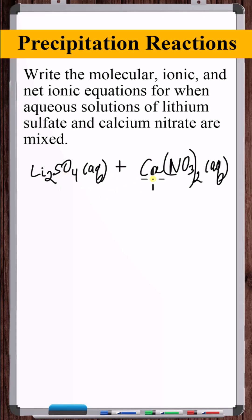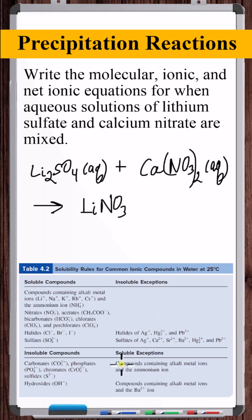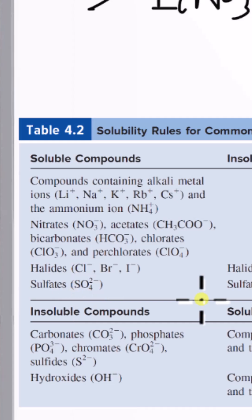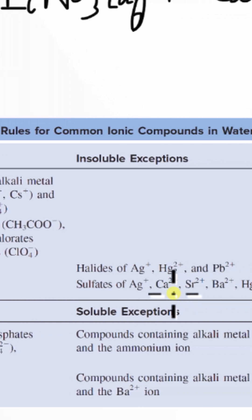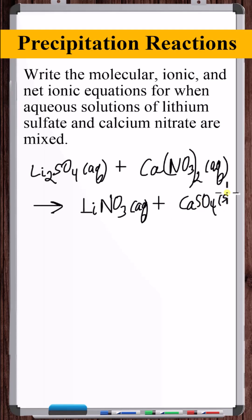The solutions are mixed and the ions can interact. The Li⁺ ions interact with NO₃⁻ ions to give lithium nitrate. Is this aqueous or insoluble? We check the solubility chart — all nitrates are soluble, so LiNO₃ is aqueous. Now Ca²⁺ interacts with SO₄²⁻ to give calcium sulfate. All sulfates are soluble with exceptions, one being the Ca²⁺ cation — so CaSO₄ is insoluble and solid.